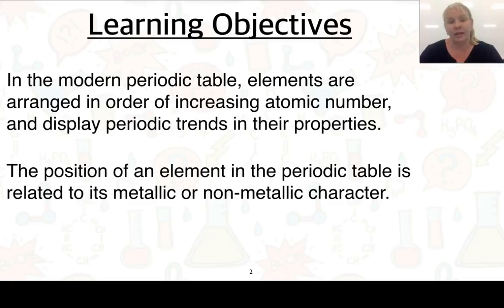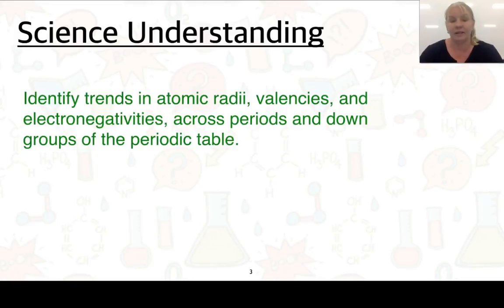Elements are arranged in order of increasing atomic number, and we can also look at the periodic table to get some properties. The position of an element in the periodic table is related to its metal or non-metallic character. The key idea is that you need to be able to identify trends in atomic radii, valencies, and electronegativities across periods and down groups of the periodic table.